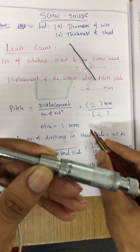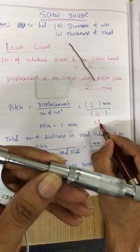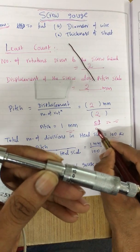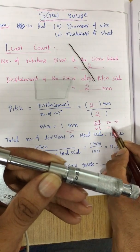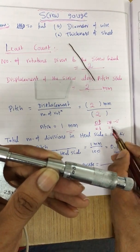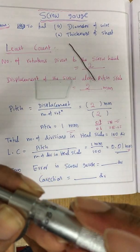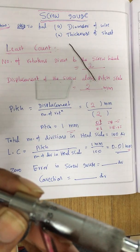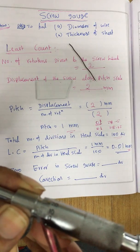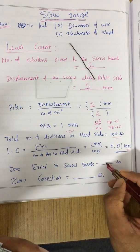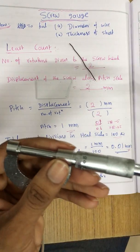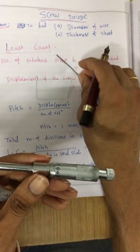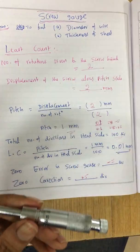So the zero error is minus 5, because zero is above the P scale. If zero is above the P scale, the zero error is minus 5. If zero is below the P scale, the zero error is plus 5. Since when I tighten, zero is above by 5 divisions, zero error is minus 5, and zero correction is just the reverse of it, which is plus 5.